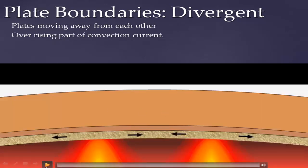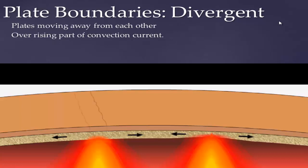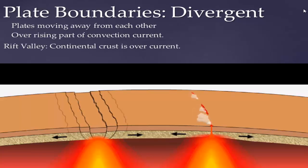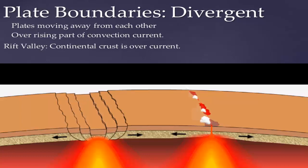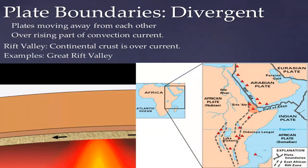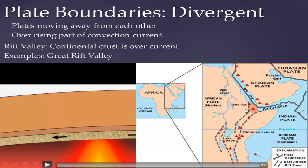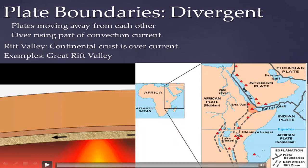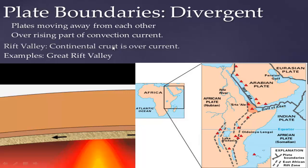When magma rises up, the crust gets separated. Depending on whether there's a continent above or not, you get different features. As a continent is ripped apart, you can get a rift valley. A great example happening right now is in Africa — Africa is being ripped apart. The horn of Somalia is being pulled one way while the rest of Africa stays still, forming a rift valley. The ground steps down in a stair-step pattern, and as elevation drops it fills with water — like the Gulf of Aden.